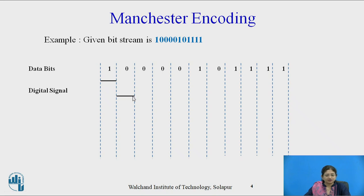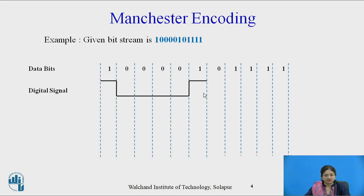So high to low gives us bits one and zero. The next three bits are zero zero zero, that means low signal. Then again the next bit is one, that is high signal. Again zero is low. Again high signal for one one one one. This shows the data bits converted into a digital signal.